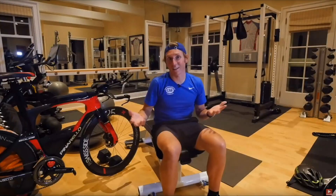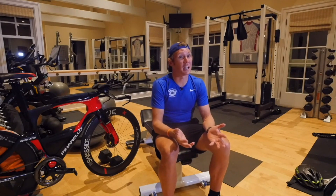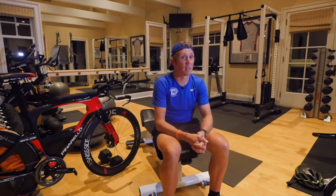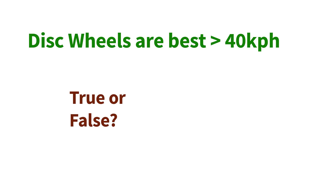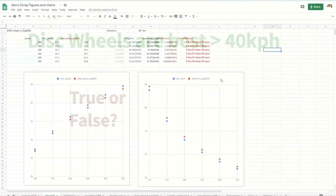As a quick bonus: let me address Cameron Wirth's statement that discs are only beneficial when you're going fast — 40 or 45 kilometers per hour — and that anything less than that you should probably go with deep section rims. This isn't correct, and it's a really common mistake. I'll show you in data why this is a mistake.